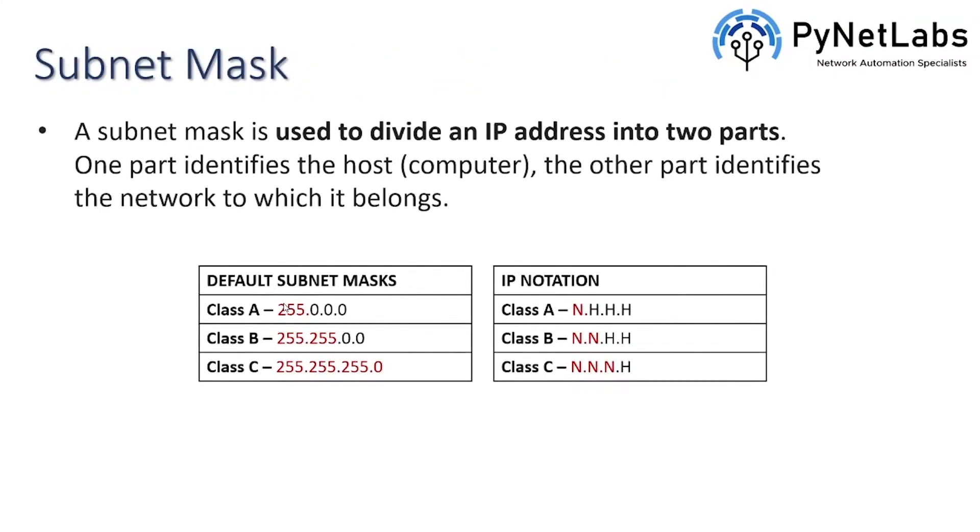Then there is this subnet mask. A subnet mask is used to divide an IP address into two parts. These two parts are the network and the host. One part identifies the host that is the computer and the other part identifies the network to which the particular address belongs to. Now we have some default subnet masks which are for class A it is 255.0.0.0, then for class B it is 255.255.0.0, then for class C it is 255.255.255.0. Now in class A we have one part as the network and the rest as the host. Then two parts for the network and two for the host, three for the network and one for the host. So we can say that subnet mask is a representation of network bits and host bits distribution inside any IP address.